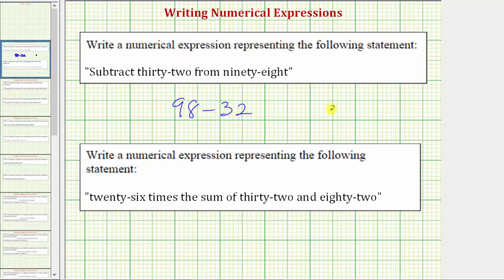If we wrote 32 minus 98, this would not be correct. This is subtract 98 from 32. The correct expression is 98 minus 32.